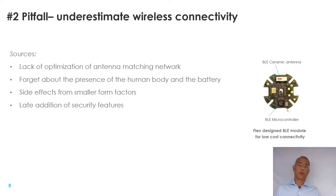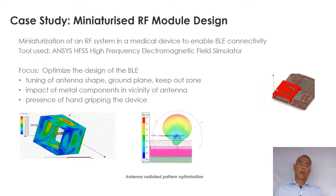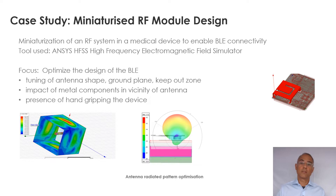Pitfall number two: underestimate the amount of effort required to create a good connection. RF connectivity requires simulations. You need to account for the hand, the battery, the small scale factor, and everything that can affect the radiation pattern of the antenna in such a small device. This becomes even more important if you plan to replace a ceramic antenna with a custom-made one using sheet metal on the PCB to save cost. While that is a good idea to lower device cost, it brings more challenges and more time at the design stage to tune the antenna shape, position, and surrounding objects.